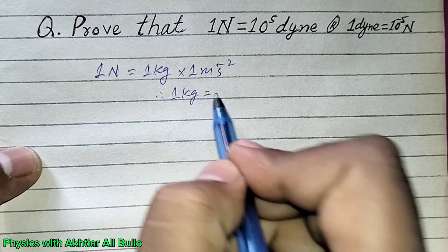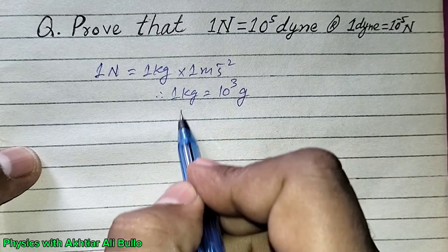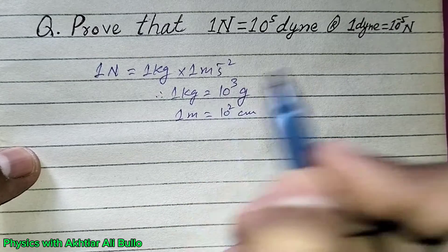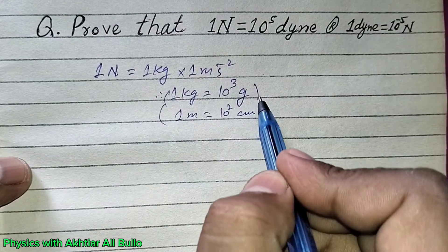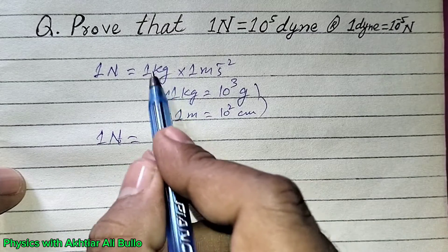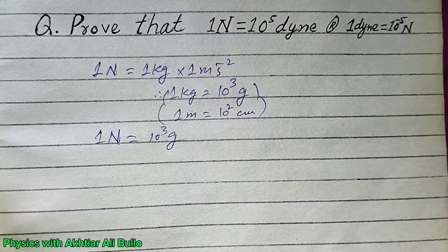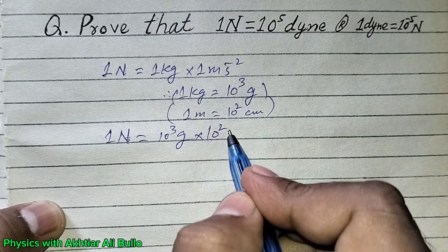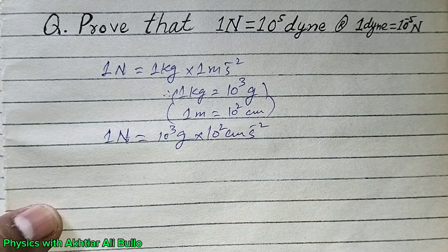1 kilogram is equal to 10 raised to the power 3 gram, and 1 meter is equal to 10 raised to the power 2 centimeter. So 1 newton will be equal to 10 raised to the power 3 gram into 10 raised to the power 2 centimeters per second square.